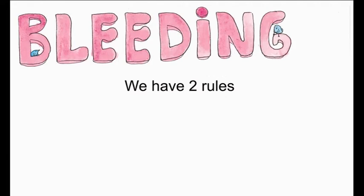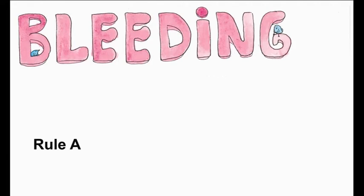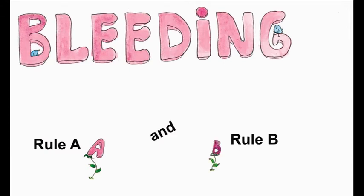Let's imagine that we have two rules: rule A and rule B. Rule A says that we have to turn an O into a U at the end of a word. Rule B says that we have to turn a P into a K before an O.